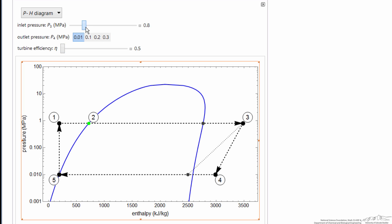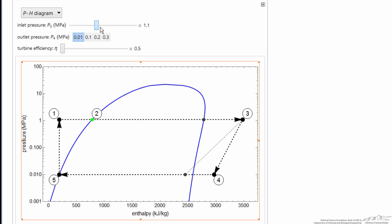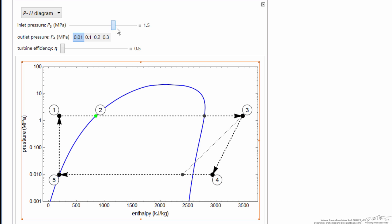where we can change the inlet pressure. This is the inlet pressure to the turbine. As we raise the pressure, of course, we're coming in with steam that has higher pressure, higher enthalpy.